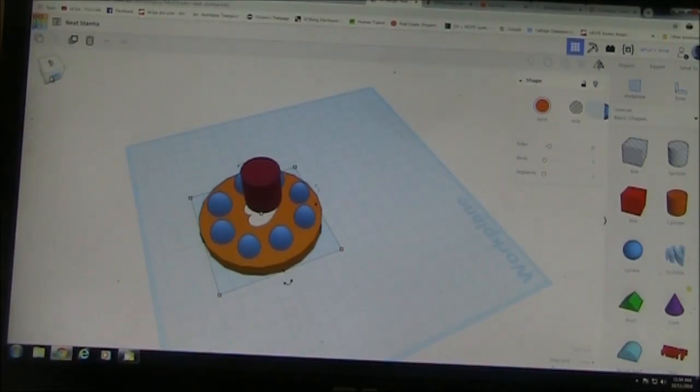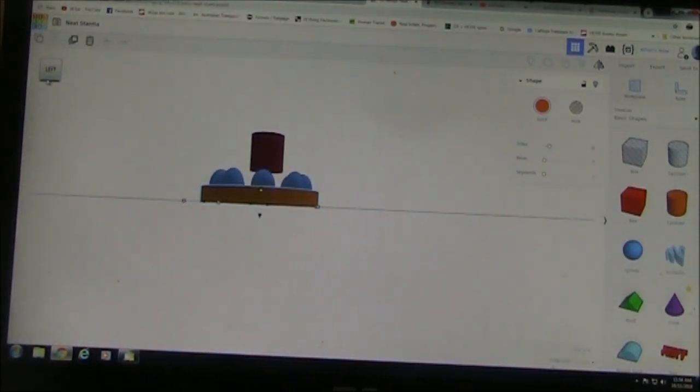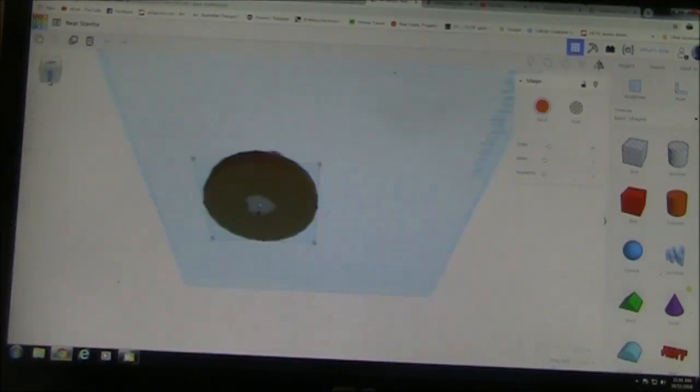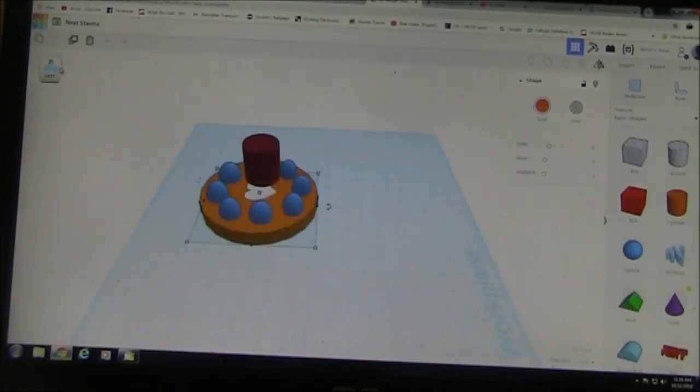This is a very simple 3D design I did, supposed to be for a cake. You can just click on the cube on the left and you can get different views of it.